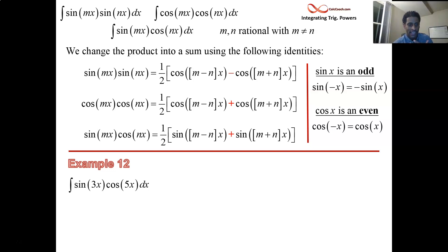Plug in m equals 3, n equals 5. 3 minus 5 is a negative 2, while 3 plus 5 is an 8. That's really it. You know how to integrate these guys.